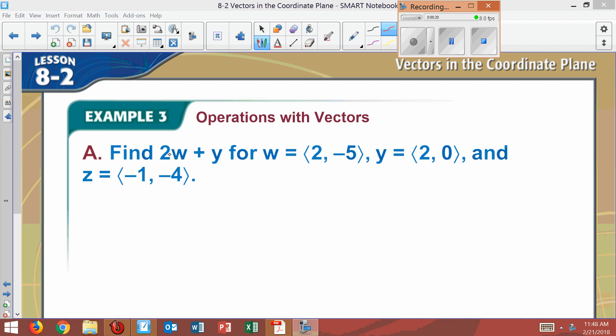So first, this 2 would distribute through just like you would do if it were parentheses. So I'm going to put a 2 right in front of that, which means 2w will equal, when you distribute, 4, negative 10.